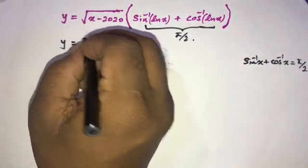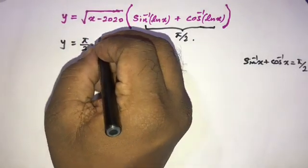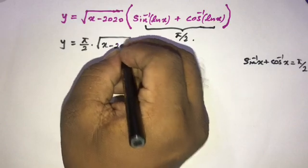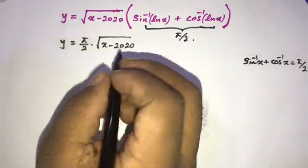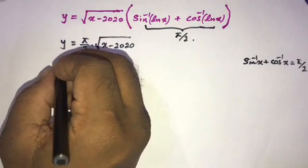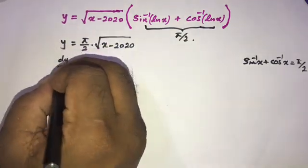the square root of x minus 2020. So now we can differentiate with respect to x. So dy by dx is equal to π over 2 is a constant